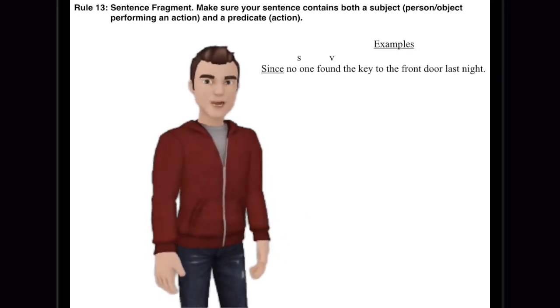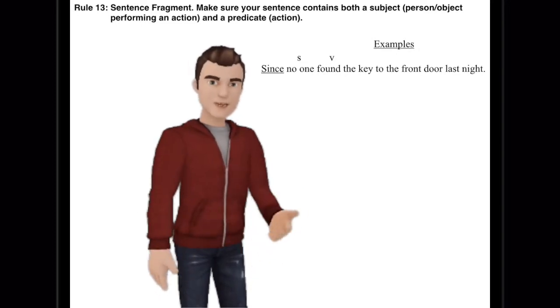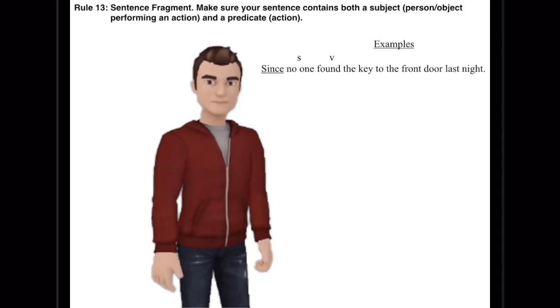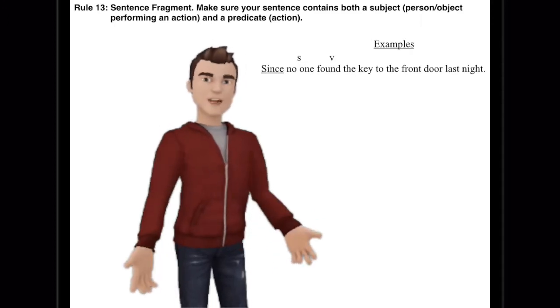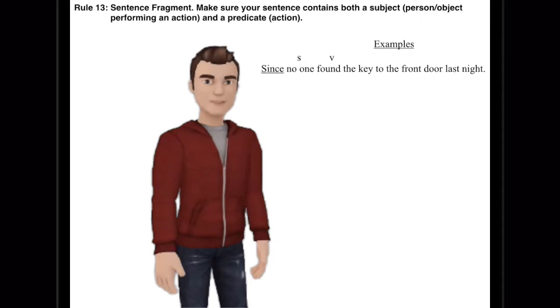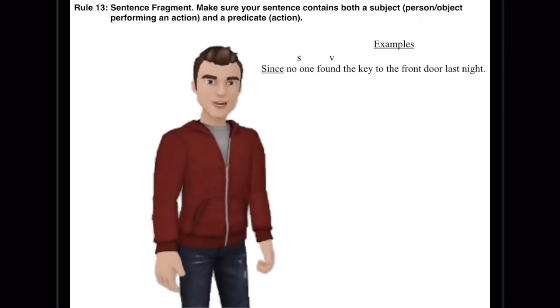Now there are independent clauses, and independent clauses can stand alone. They have subject and a verb, but a dependent clause cannot, and this is a dependent clause. So the word since subordinates it, makes it dependent.